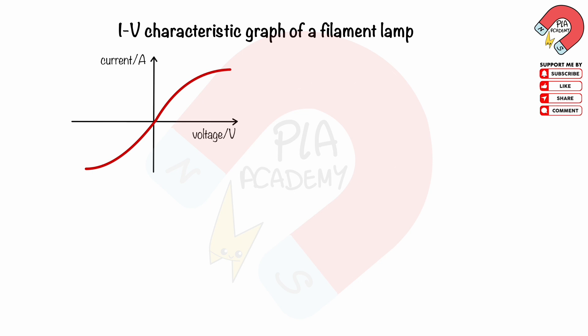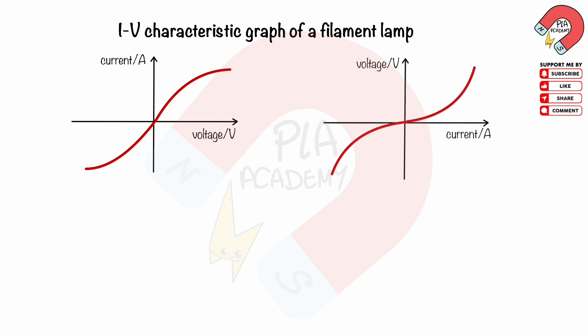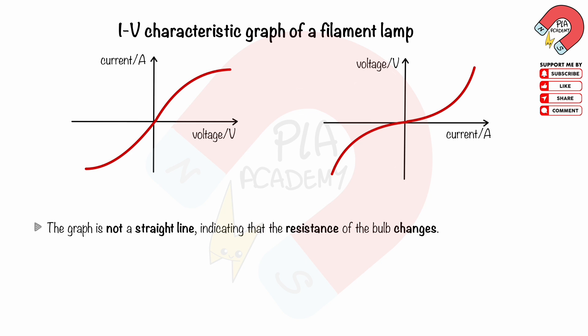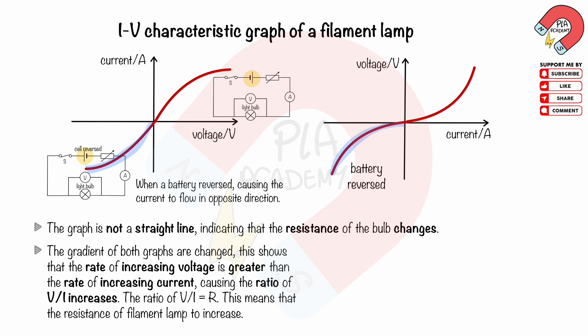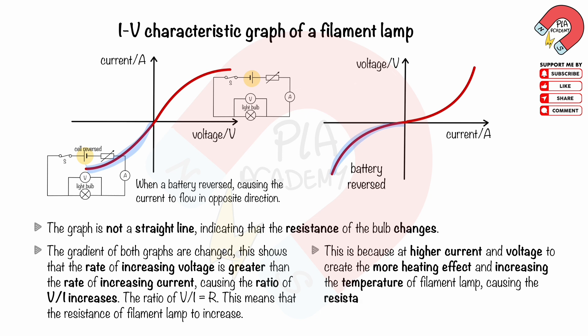IV characteristic graph of a filament lamp. The graphs of current I against voltage V and voltage V against current I are shown. The graph is not a straight line, indicating that the resistance of the bulb changes. In the reversed battery sections, the current flows in the opposite direction. The gradient of both graphs changes, showing that the rate of increasing voltage is greater than the rate of increasing current, causing the ratio V over I to increase. Since V over I equals R, the resistance of the filament lamp increases. This is because at higher current and voltage, there is more heating effect, increasing the temperature of the filament lamp and causing resistance to increase.